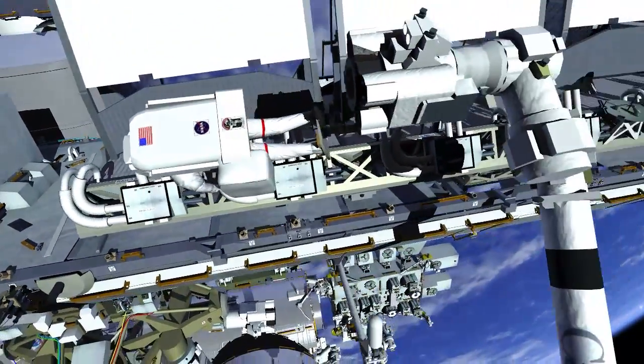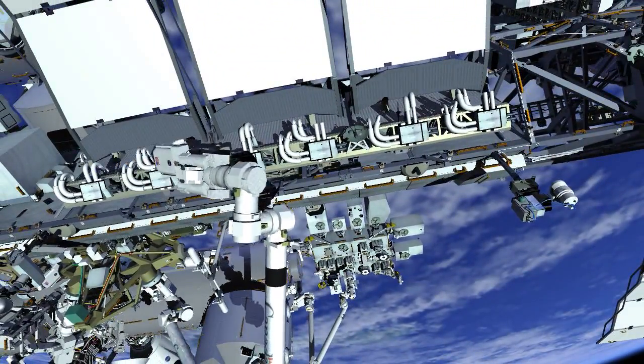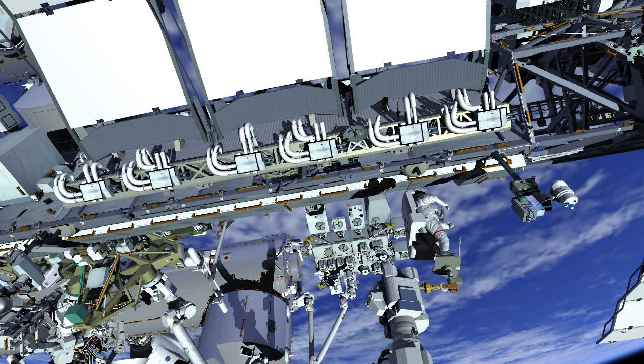After completing the jumper task, the robotic arm operator flies EV1 to the camera port 8 worksite.